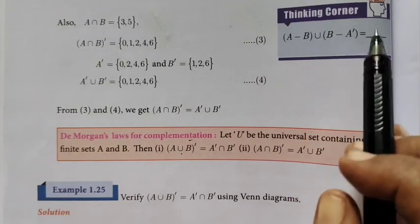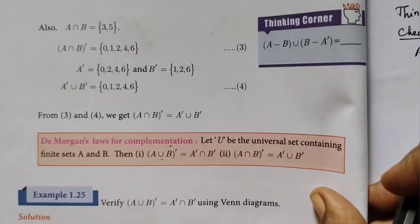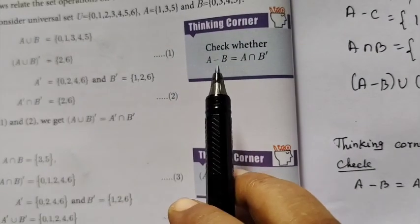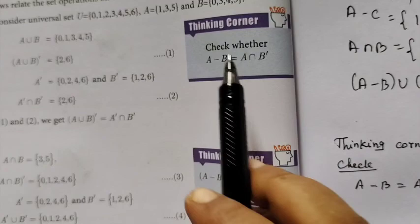This is a thinking corner. A minus B union B minus A dash. This is correct. Here is another one. A minus B equal to A intersection B dash. Check it out. A minus B equal to A intersection B dash.